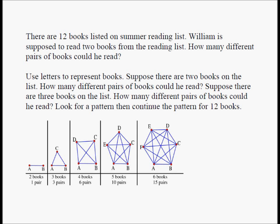There are 12 books listed on a summer reading list. William is supposed to read two books from the reading list. How many different pairs of books could he read? Use letters to represent books. Suppose there are two books on the list — how many different pairs could he read? Suppose there are three books on the list — how many different pairs? Look for a pattern, then continue the pattern for 12 books.